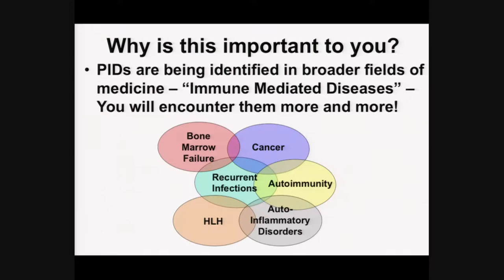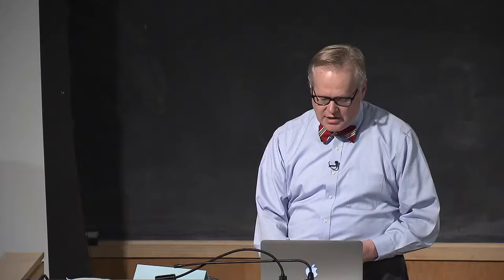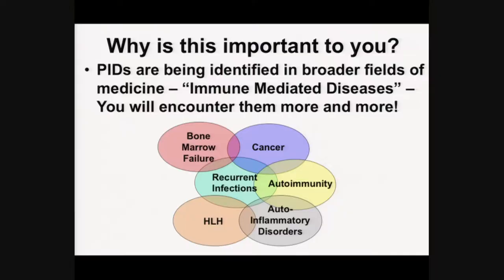Beginning in 1994, genetic defects started being published in the immunodeficiency world, and there has been an explosion of genetics in this field. We now have about 270 single-gene defects that can give a phenotype of immunodeficiency. The spectrum of diseases has broadened, and as we've identified patients we've begun to understand how they masquerade in other clinics. Immunodeficiencies are being identified in broader fields of medicine — we now talk about these as immune-mediated diseases.